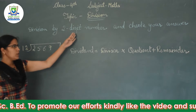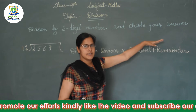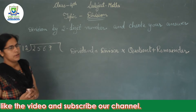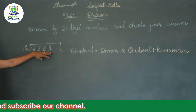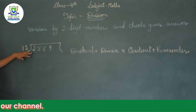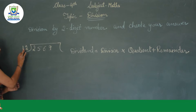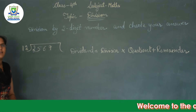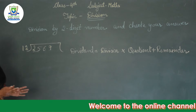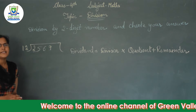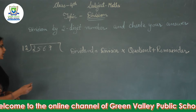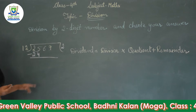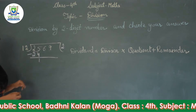Now division by a 2-digit number, and we will also check our answer. We have dividend 2569 and divisor 12. Reading the table of 12, we need a product equal to or less than 25. 12 ones are 12, and 12 twos are 24. Subtracting: 5 minus 4 is 1, and 2 minus 2 is 0.